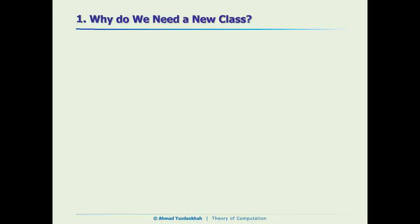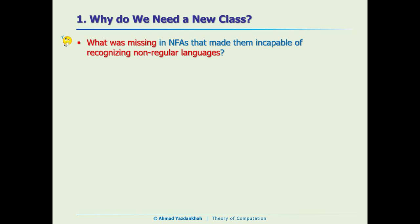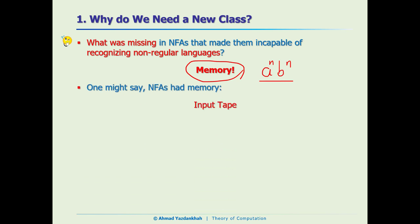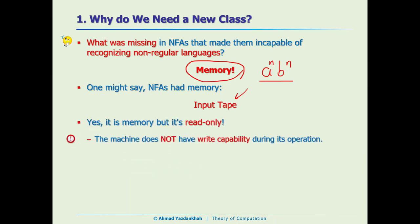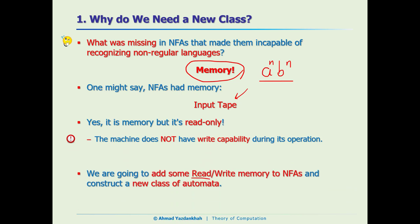What was missing in NFAs and DFAs that prevented them from recognizing non-regular languages? The answer is memory. We tested A^n B^n and noticed we need to count the number of A's and ensure the number of B's is equal. We need a storage mechanism — a writable memory. NFAs had an input tape, but that is read-only memory. So we want to add read-write memory to NFAs to create a new class of machine.